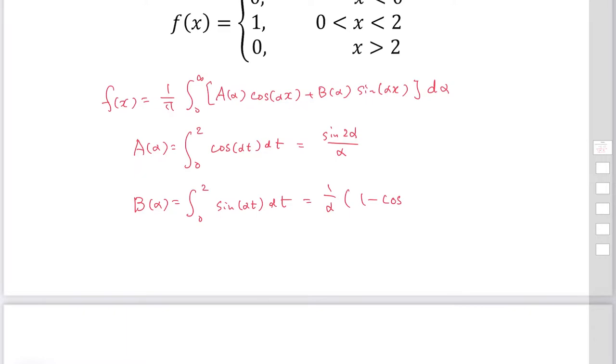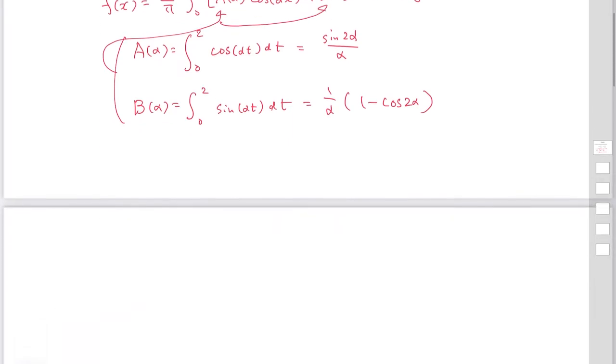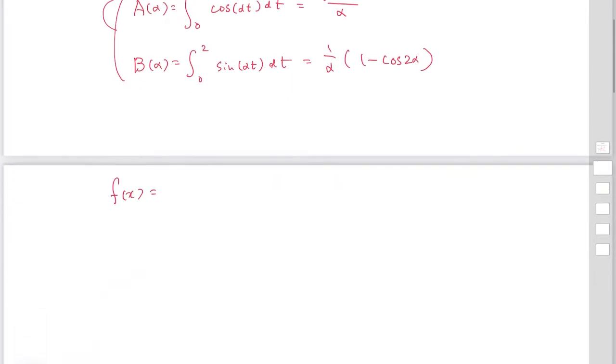By substituting these values for a and b, f(x) becomes 1 over pi times the integral from 0 to infinity of sin(2 alpha) over alpha times cos(alpha x), plus 1 over alpha times (1 minus cos(2 alpha)) times sin(alpha x), d alpha. This corresponds to a(alpha) and b(alpha).